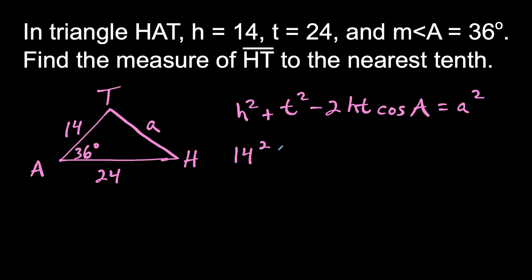So we have 14 squared plus 24 squared minus 2 times 14 times 24 times cosine of 36 degrees. And this is equal to a squared.